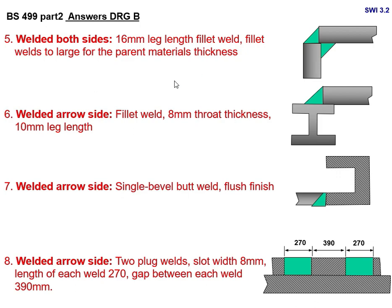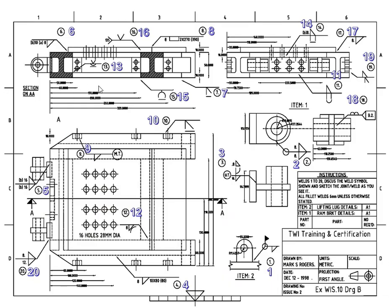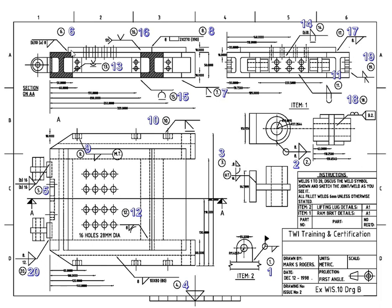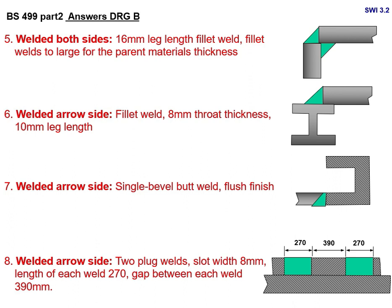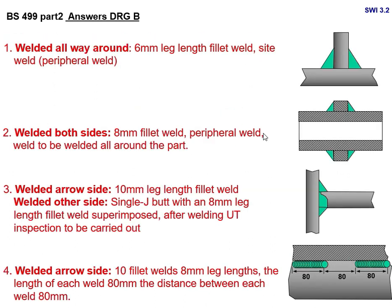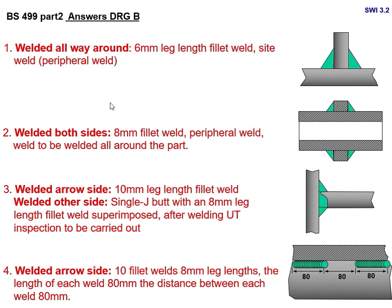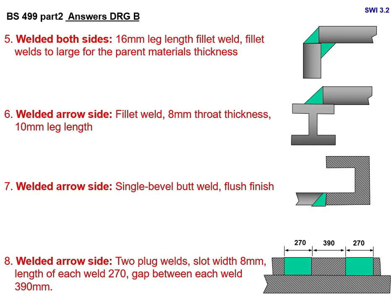Joint number 6 shows 'B10, A8.' Welded arrow side: fillet weld with 8 mm throat thickness and 10 mm leg length. So 'B' is 10 mm leg length and 'A' is 8 mm throat thickness. This is a fillet weld — 8 mm throat thickness, 10 mm leg length. Note: this is not an all-around weld.